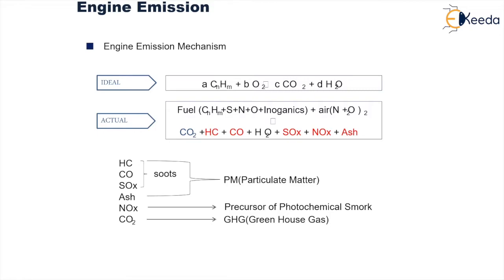Now what happens is when the fuel is burnt in the presence of air along with hydrocarbons — in the fuel there might be certain traces of sulfur, nitrogen, free oxygen, and some inorganic elements as well. Air along with its nitrogen and oxygen when it combines with the fuel during the process of combustion gives rise to the formation of carbon dioxide and water primarily, and along with it we may also see in the emissions some parts of hydrocarbon, carbon monoxide, oxides of sulfur, nitrogen, as well as ash.